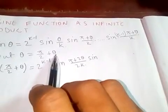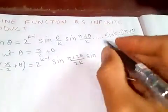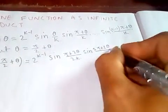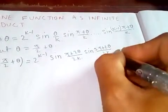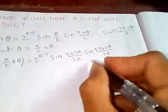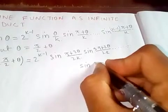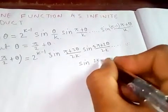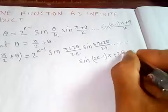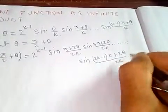And here is sine — if you put theta equal to pi over 2 plus theta, that means 3 pi plus 2 theta over 2k, and so on, and the last term will be sine of 2k minus 1 times pi plus 2 theta, all over 2k.